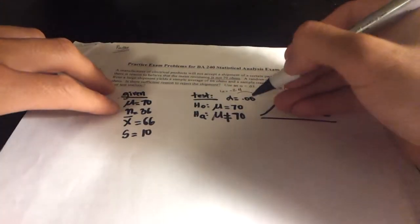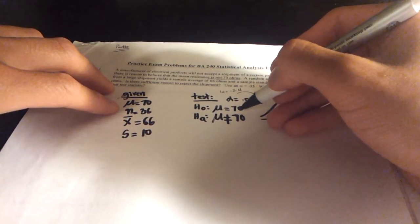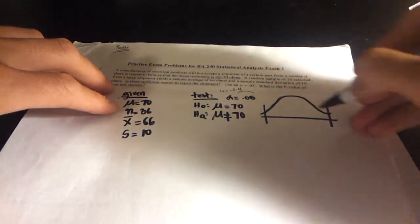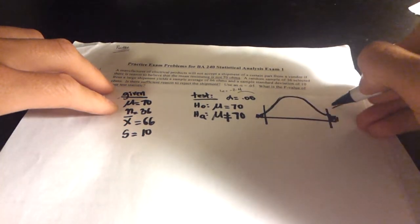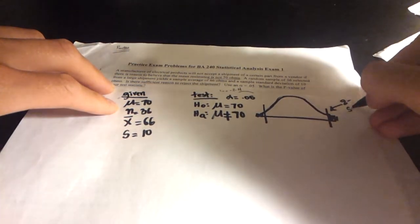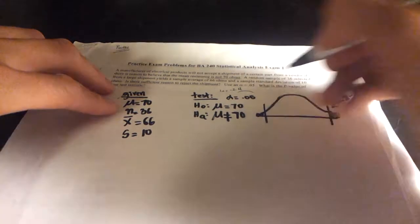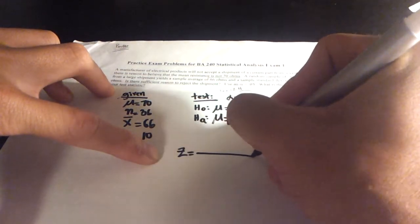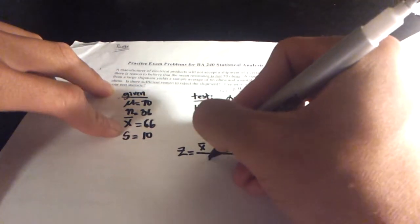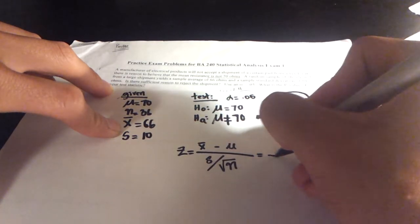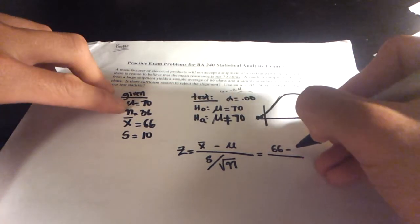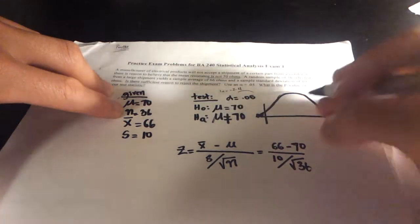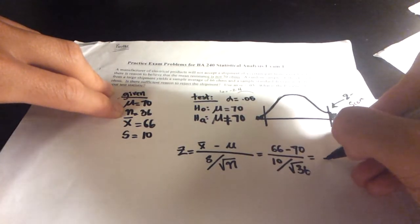Alright, so now I know that the alpha level is 0.05 and this is a two-sided z-test. So I have one over here, one over here, right? So this over here will be a z-score that we will find next. Alright, so let's find z. To find z, I want to use this formula over here. z is equal to x-bar minus mu divided by s over square root of n. So x-bar is 66, mu is 70, s which is 10, and square root of n, we found it already over here, which is 36. So if you do this correctly, you should come up with something negative 2.4.